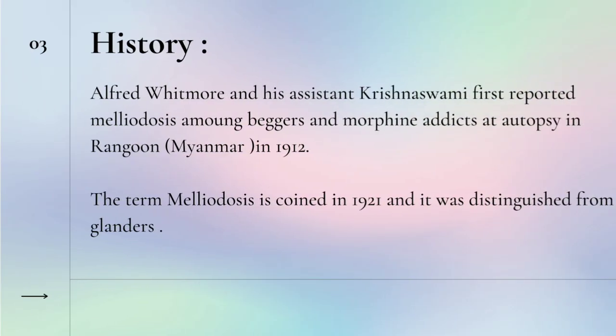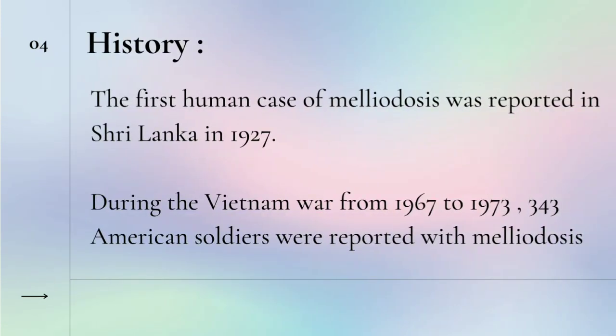About history: Alfred Whitmore and his assistant Krishnaswami first reported Maliyae disease among beggars and morphine addicts at autopsy in Rangoon, Myanmar in the year 1912. About 8 years later, the term Maliyae disease was coined in 1921 and it was distinguished from Glander's disease. The first human case of Maliyae disease was reported in Sri Lanka in 1927. During the Vietnam War, from 1967 to 1973, 343 American soldiers were reported with Maliyae disease. It was also found in Paris Zoo, where imported pandas were infected by the disease.